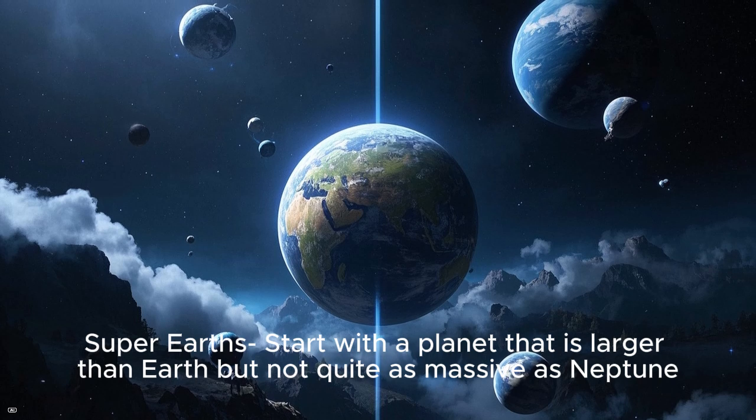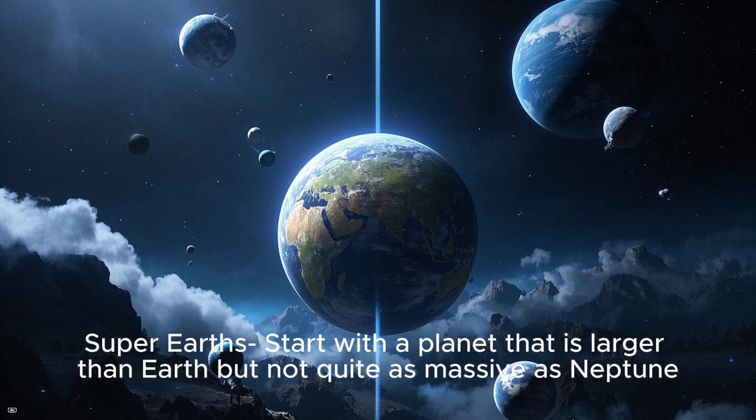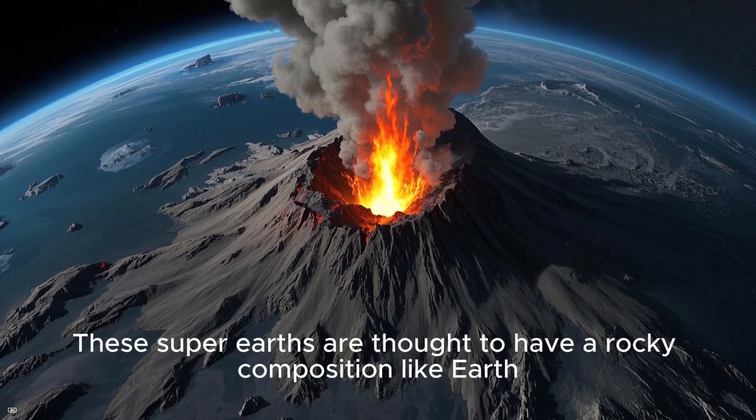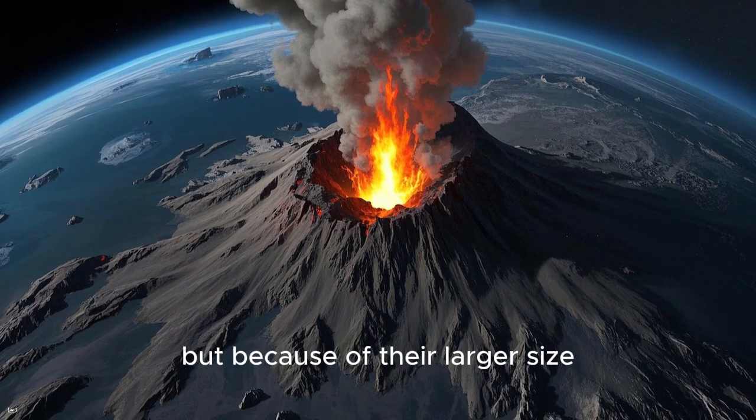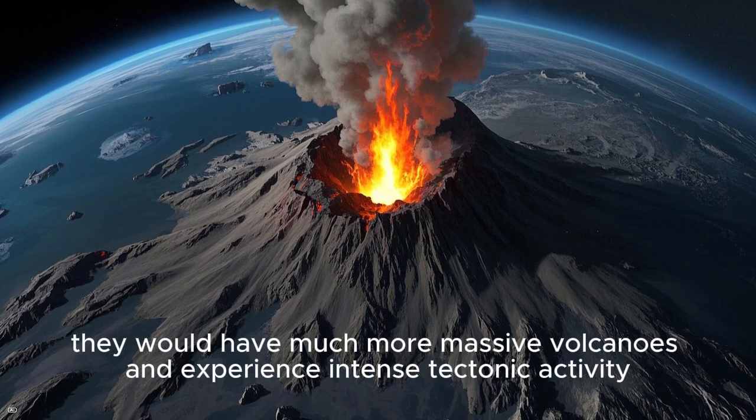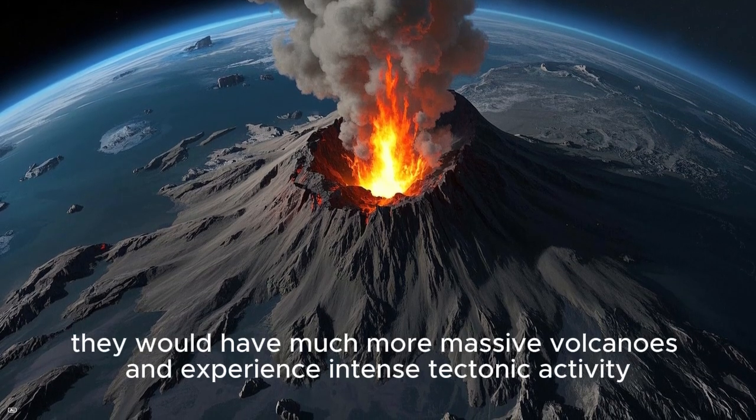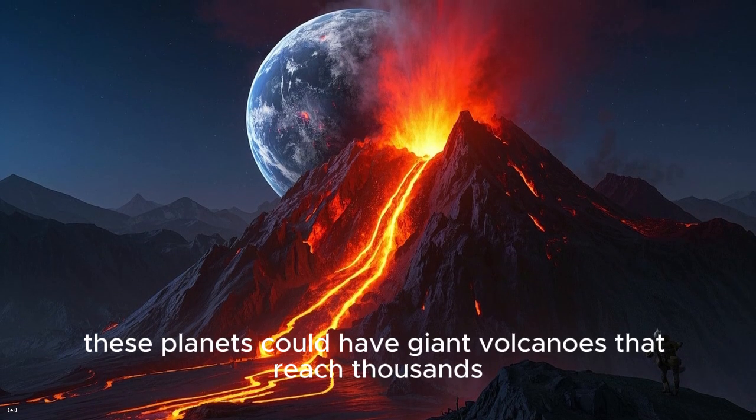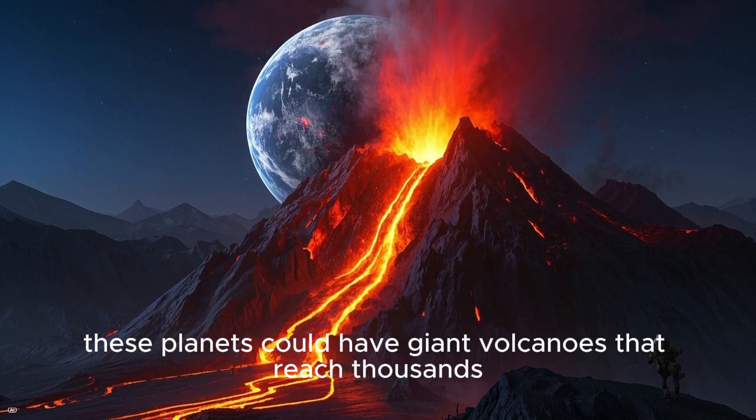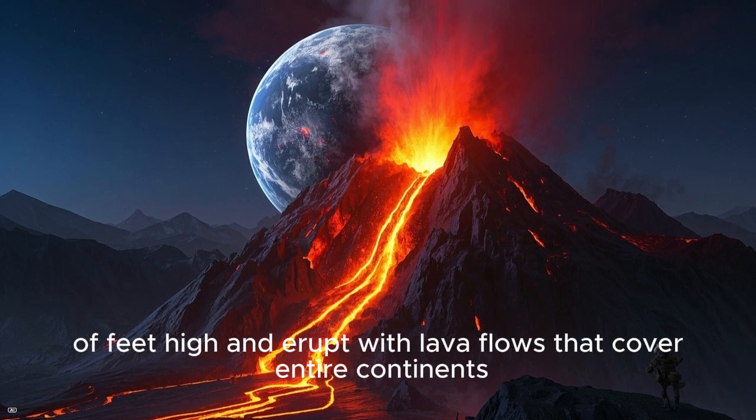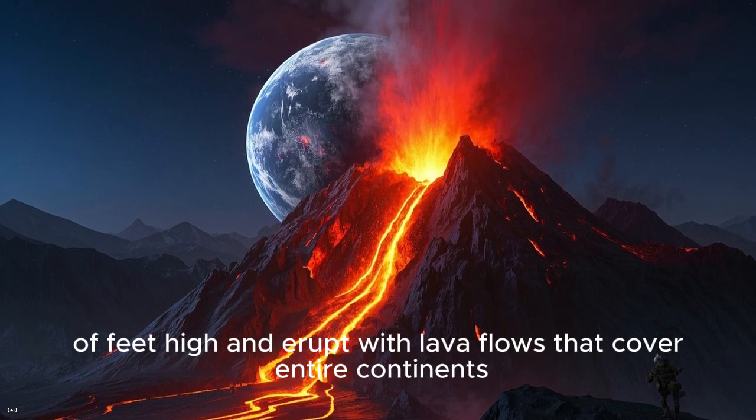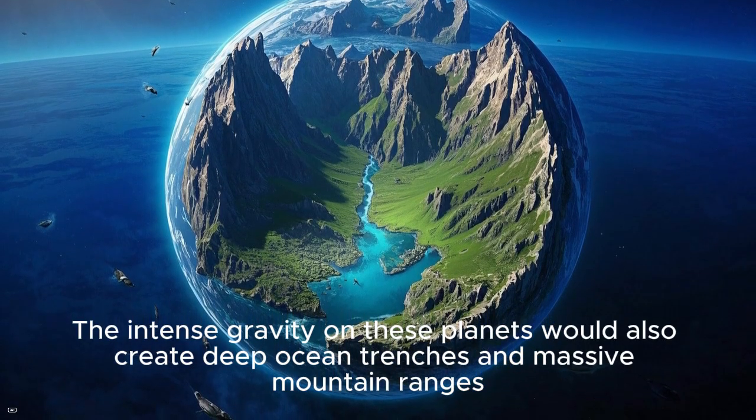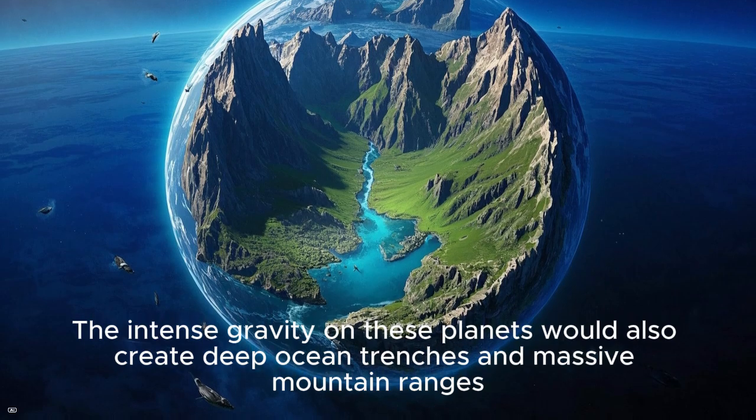Super-Earths: Start with a planet that is larger than Earth but not quite as massive as Neptune. These super-Earths are thought to have a rocky composition like Earth, but because of their larger size, they would have much more massive volcanoes and experience intense tectonic activity. As a result, these planets could have giant volcanoes that reach thousands of feet high and erupt with lava flows that cover entire continents. The intense gravity on these planets would also create deep ocean trenches and massive mountain ranges.